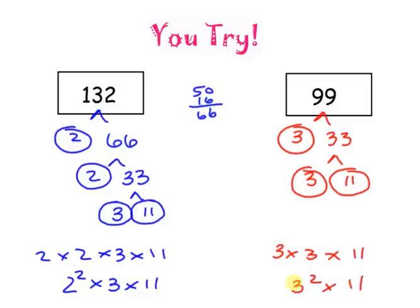Go ahead and pause the video if you need more time. I'm not going to go too in depth about my process since you can take a look — you'll more than likely end up with the same answer if you break it up differently, as long as you do it correctly. For 132, I got 2 times 2 times 3 times 11, which is 2 to the second power times 3 times 11. For 99, I got 3 times 3 times 11, which is 3 to the second power times 11.